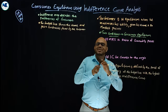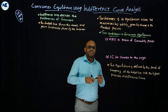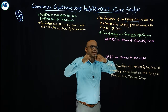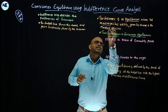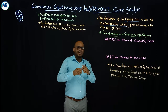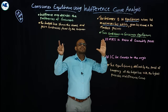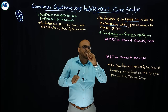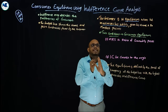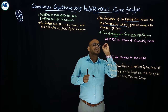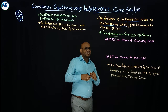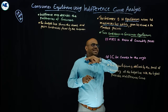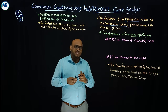Let me start with a simple question: what do you mean by consumer equilibrium? The consumer is in equilibrium when he maximizes his utility subject to some constraints. The constraints are: one, his budget — that is his income — and another is the market prices of the commodities.